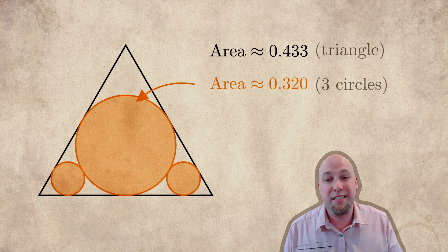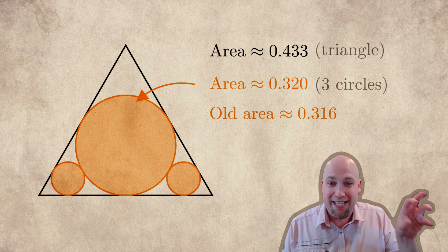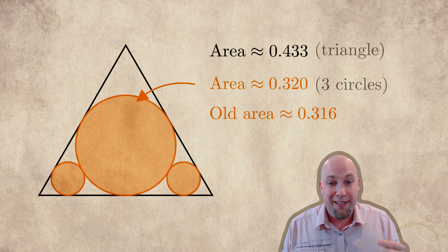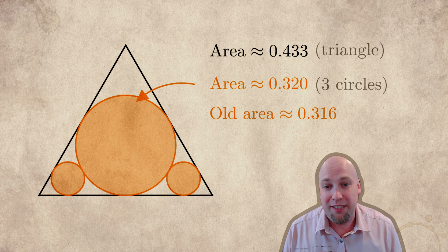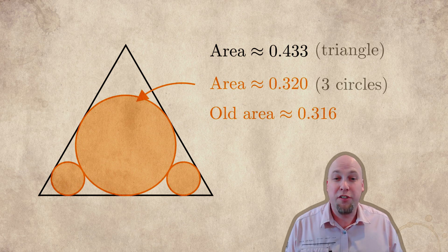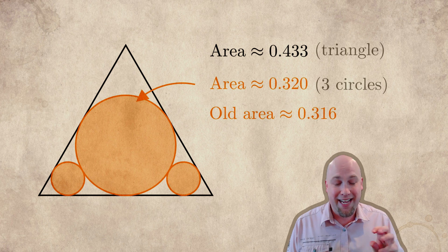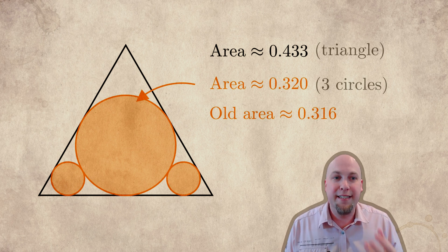This time the area covered is about 0.320 instead of 0.316. We've got about 0.004 extra units of area covered. The percentage of the triangle that's covered now has increased from 72.9% to 73.9%. And it turns out this configuration actually is optimal.